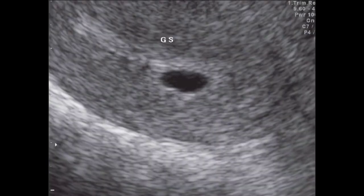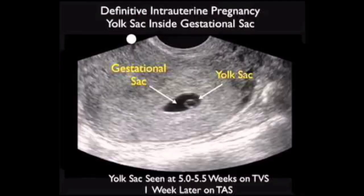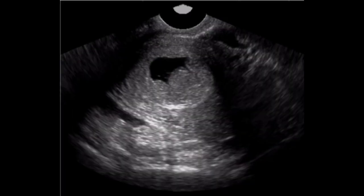An abnormally shaped gestational sac or yolk sac should raise concern for a failing pregnancy. The gestational sac should normally be round or oval. An irregular gestational sac with angulations or teardrop shape is associated with a poor prognosis.